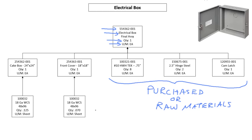If we look at the cake box, it has a quantity of one and a unit of measurement of each. So I get one cake box per electrical box final assembly — that makes sense, I only see one here.